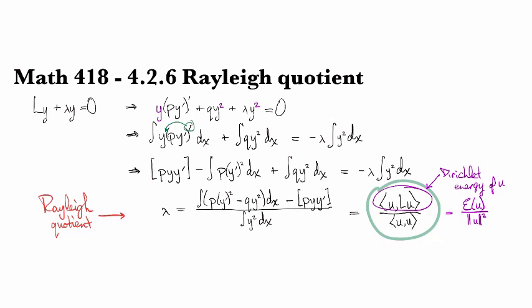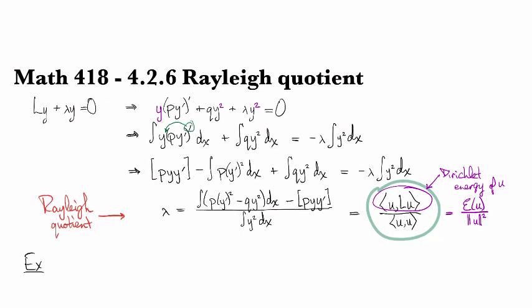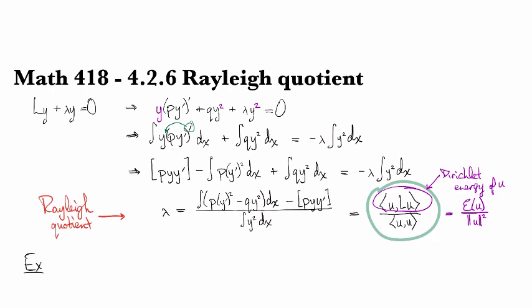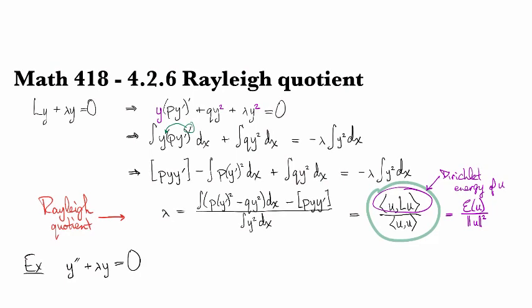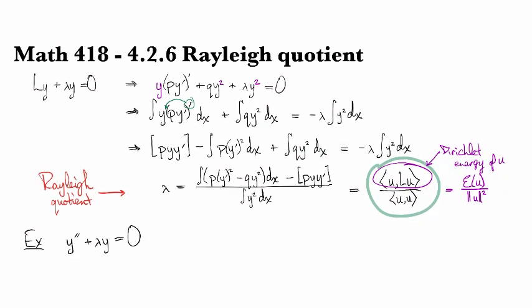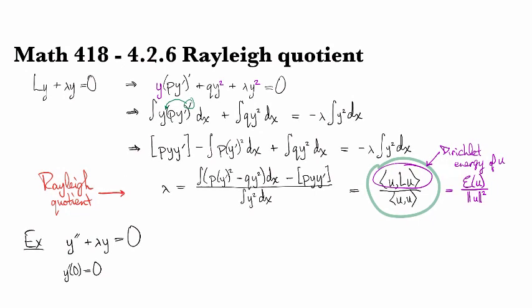So then let's look at an example of what we can deduce about a Sturm-Liouville problem by looking at the Rayleigh quotient. So, if we look at something like we've already done, like maybe this guy. And we'll take boundary conditions of y prime at 0 equals 0 and y at L equals 0. So, we're working on the interval from 0 to L.